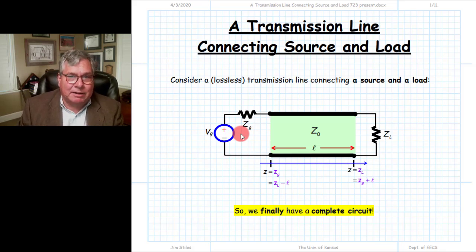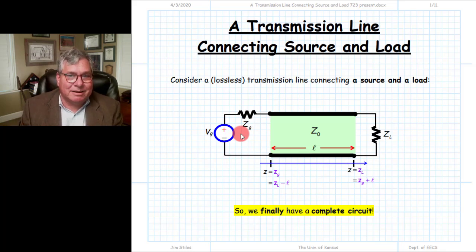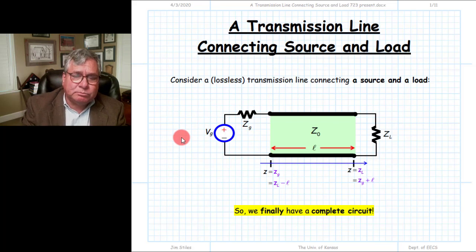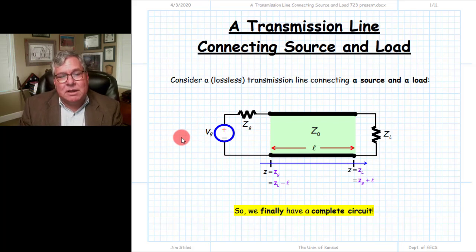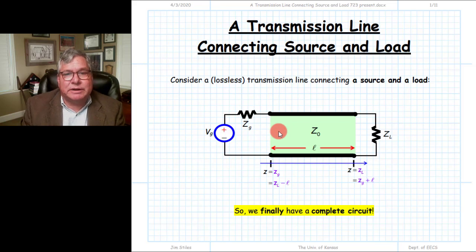This relationship was far more complicated than the one we had for the load. Instead of being related by a simple constant like gamma L, V0 plus and V0 minus had a relationship that was not simply proportional — there was another term that was dependent on the source voltage of the line. Nonetheless, we did have a relationship between V0 plus and V0 minus derived for a source connected to a transmission line not connected to a load.